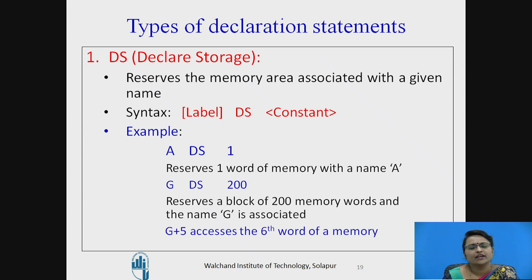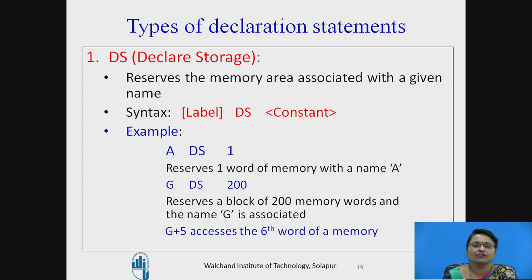If we specify G+5, it accesses the 6th word of the memory block named G. That covers Declare Storage.